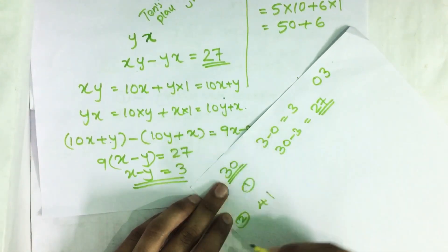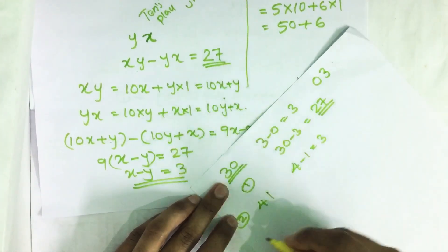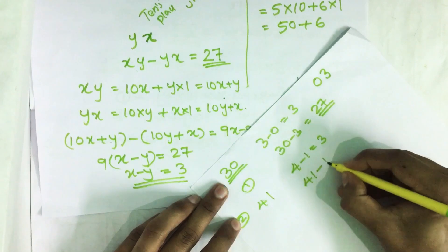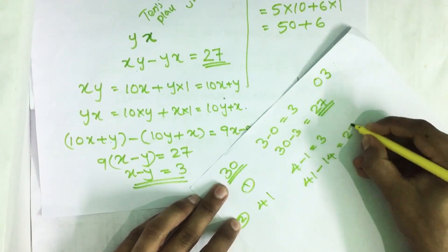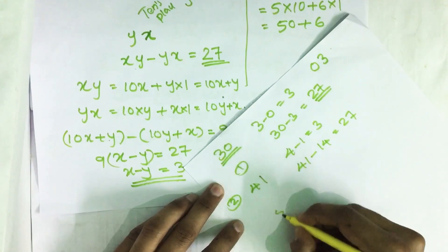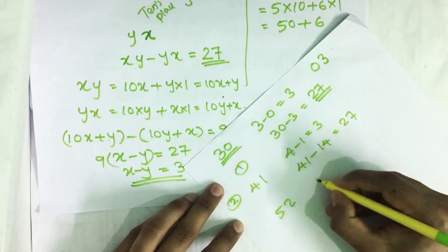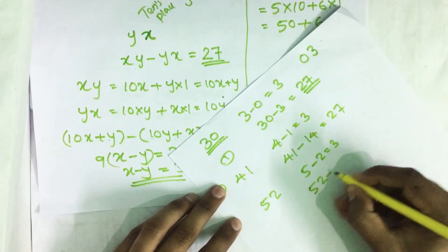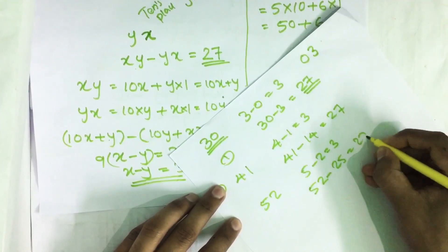Then take another example, 41. 4 minus 1 equals 3. Then 41 minus on reversing we get 14, which gives us 27. Then next number, 52. 5 minus 2 equals 3. Then 52 minus 25, we get 27.